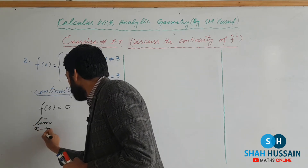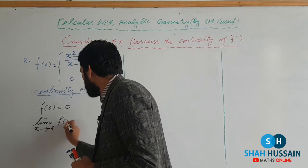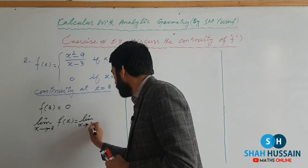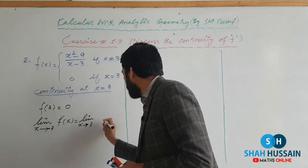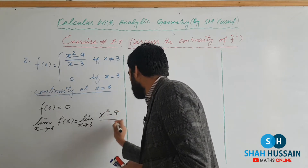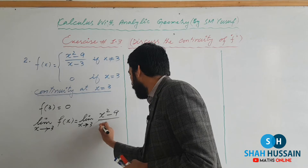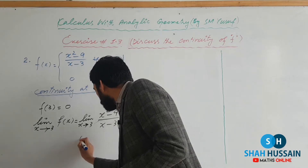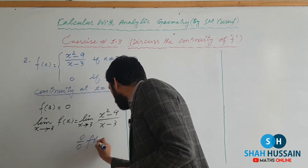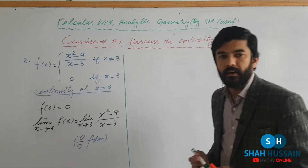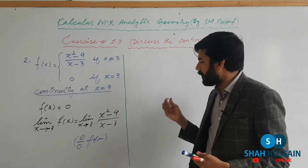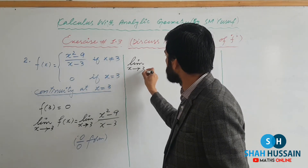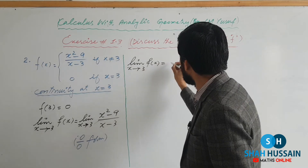We will find: limit as x approaches 3 of f(x) = limit as x approaches 3 of (x² - 9)/(x - 3). If we apply the limit directly, we get 0/0 form. Since this is an indeterminate form, we cannot apply the limit directly. So we will simplify the right hand side.